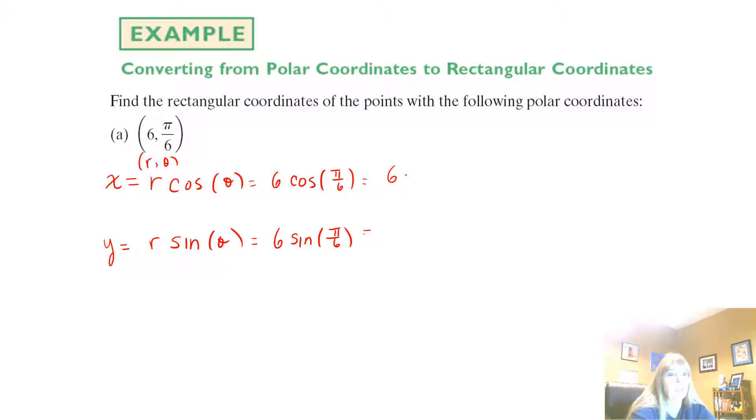And so I have 6 times what's the cosine of pi over 6. Got it? You don't remember. You got your unit circle? Where's your unit circle? So it's square root of 3 over 2. I can make that a fraction and, of course, cancel. And so this would be 3 square root of 3. And so then I get 6 times the sine of pi over 6. Got that unit circle? 1 half. So this equals 3.